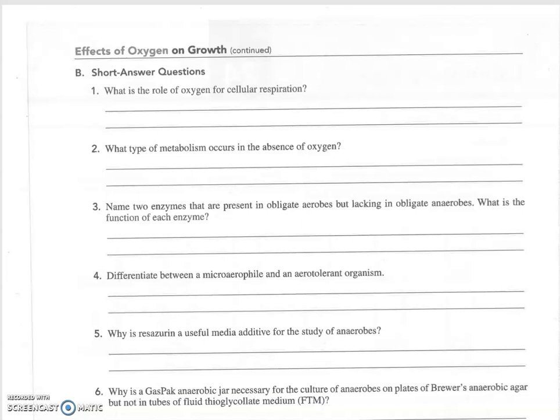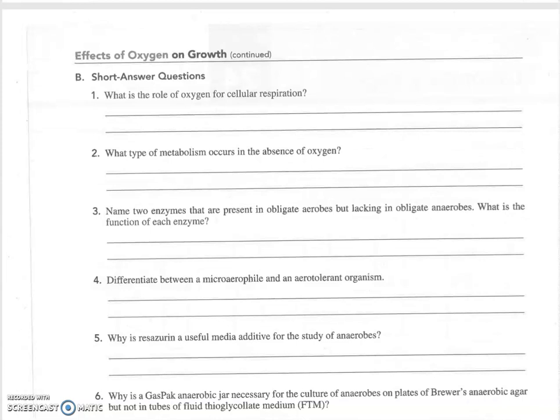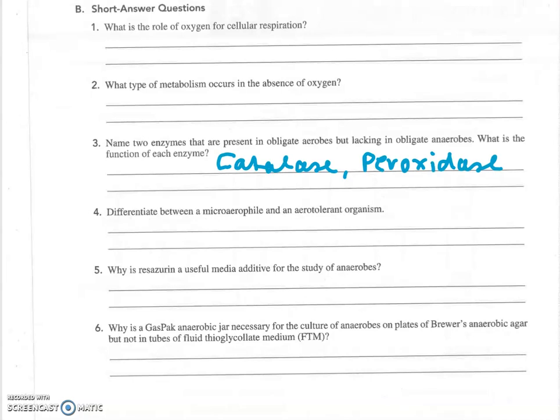Number two, what type of metabolism occurs in the absence of oxygen? That's called fermentation, something that we're going to talk more about in lecture. Number three, name two enzymes that are present in obligate aerobes but lacking in obligate anaerobes. And that will be catalase and peroxidase. Both of these enzymes, catalase and peroxidase, they will break down peroxide into water and oxygen and thereby removing the highly reactive peroxide that could be damaging to cells.